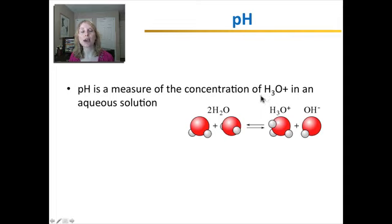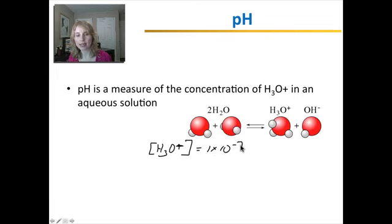So pH is the measure of the concentration of hydronium ions in an aqueous or water-based solution. Say I take neutral water. The concentration of hydronium ions in neutral water is equal to one times ten to the negative seventh, and this gives me a pH of seven.